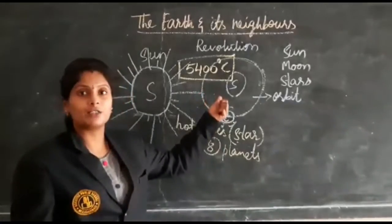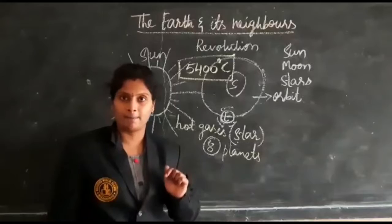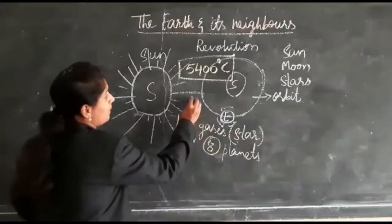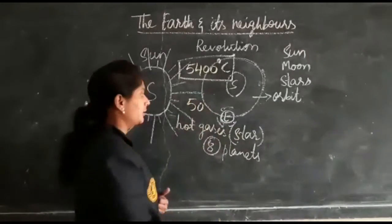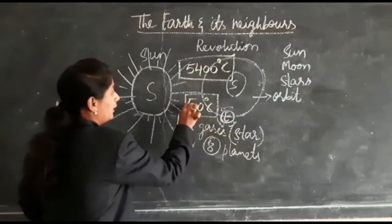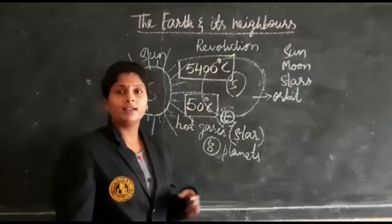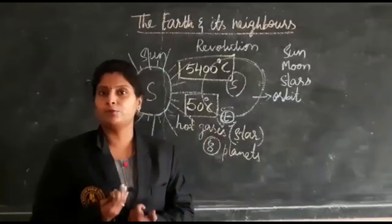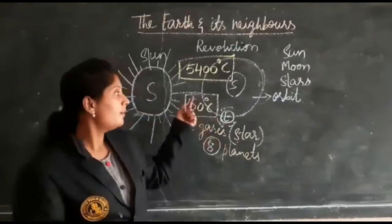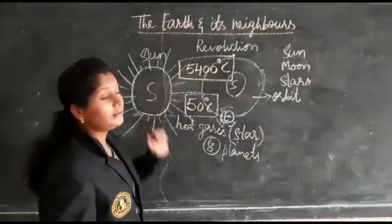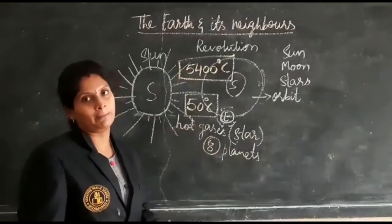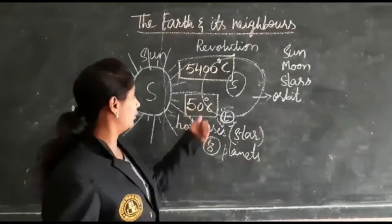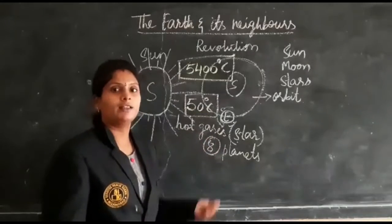On the sun's surface, there is a temperature of 5400 degrees centigrade. On a very hot summer day on earth, the temperature reaches a maximum of only 50 degrees centigrade, and we are unable to tolerate even that much. But on the sun's surface there is 5400 degrees centigrade — you can imagine how much heat the sun is producing.